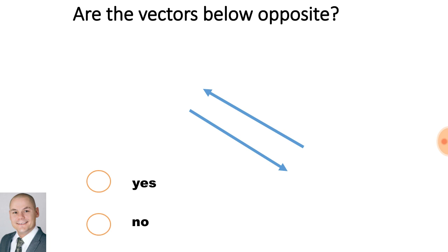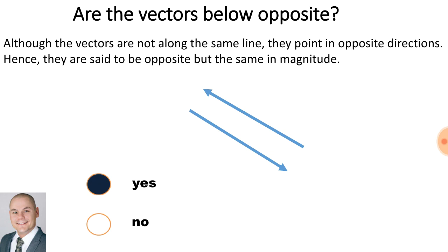Are the vectors below opposite to each other? Yes. Although the vectors are not along the same line, they point in opposite directions. Hence, they are said to be opposite, but the same in magnitude.